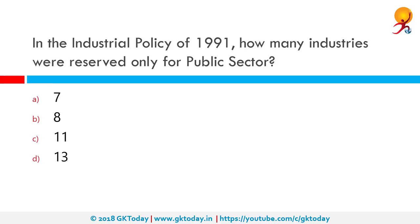In the Industrial Policy of 1991, how many industries were reserved only for the public sector? On July 24, 1991, the Government of India announced its new industrial policy. The number of industries reserved for public sector was reduced from 17 as per the 1956 policy to only 8: Arms and Ammunition, Atomic Energy, Coal, Mineral Oil, Mining of Iron Ore, Manganese Ore, Gold and Silver, Mining of Copper, Lead and Zinc, Atomic Minerals, and Railways. Currently, only two categories — Atomic Energy and Railways — are still reserved.